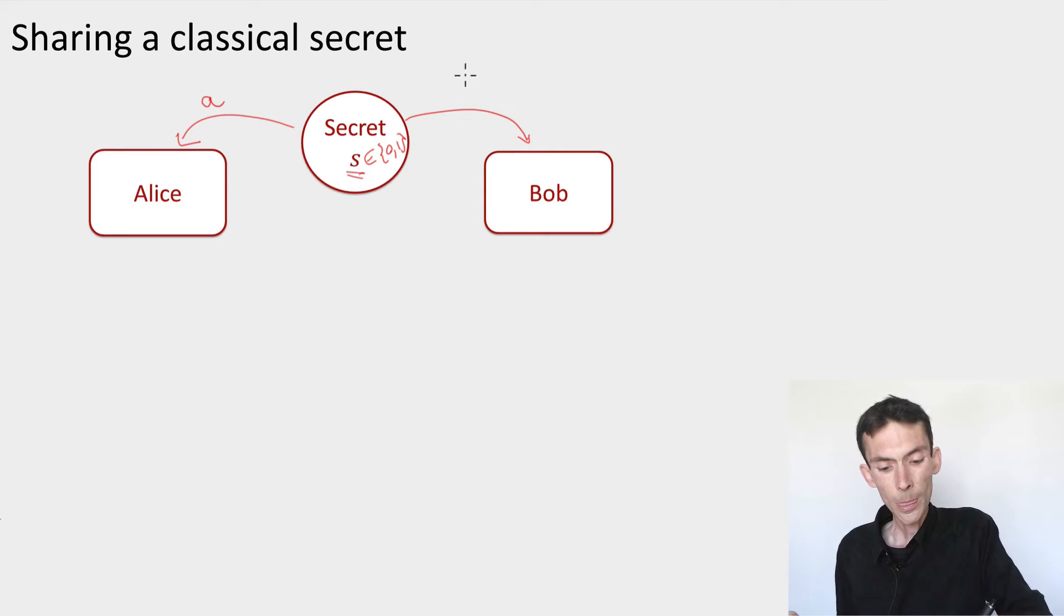By sending each of them a share of the secrets. So Alice is going to receive an A, Bob is going to receive a B, and the properties we'd like is that each of the parties by themselves is not able to recover any information over the secret. So Alice doesn't know S, even though she has A. Bob doesn't know S either. But if Alice and Bob come together and exchange their shares A and B, then they're able to recover the secret S.